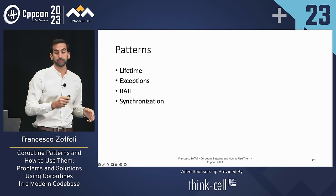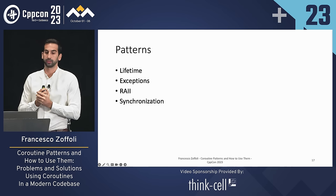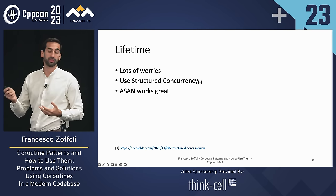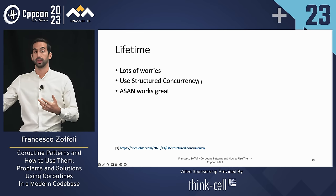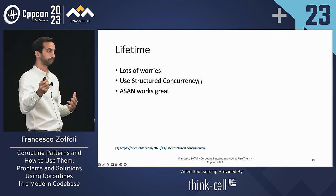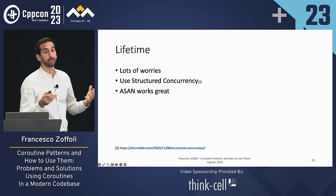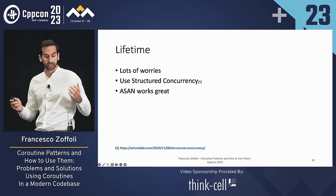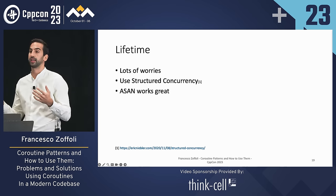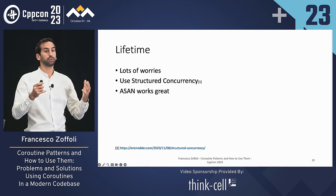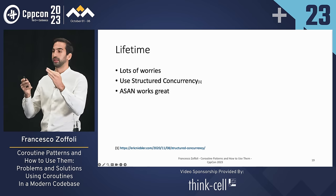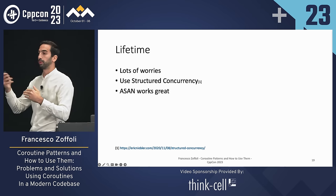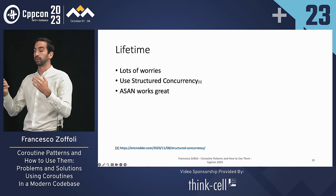With these fundamental concepts, we can jump into our patterns. We're going to start with lifetime. When coroutines were being proposed, there were a lot of concerns about the lifetime of coroutines — many people were worried about problems with references and accessing invalid memory. In practical terms, this hasn't been a problem in the code base I've been working on. The secret is to use structured concurrency: the fundamental idea is that you must join on the work you start in a scope — you don't leave the scope without joining the work. This guarantees you can reference local state with pointers or references without a risk of a leak.